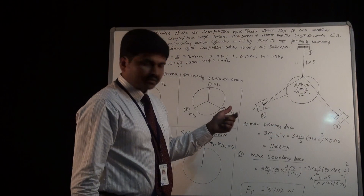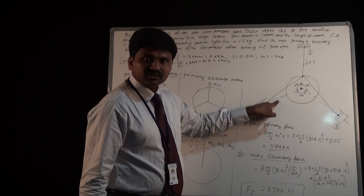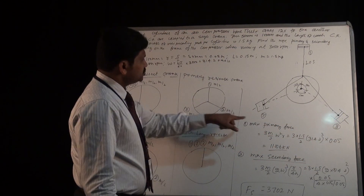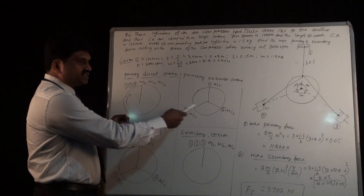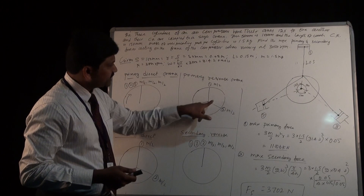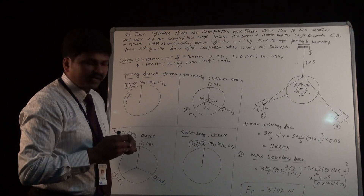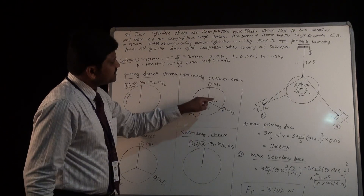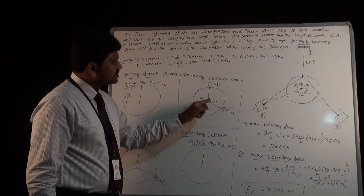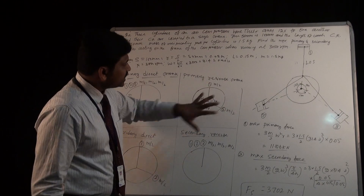The direct crank of cylinder 3 is shown at 240 degrees. To show the reverse crank, 240 degrees is measured in the opposite direction. Now, looking at the diagram: three masses are placed at one point for the direct cranks, and the half-masses m/2 are placed at three equally spaced points — each separated by 120 degrees. Because equal magnitude masses are placed at equal angles, they will produce centrifugal forces that get balanced by each other. There is no unbalanced force due to the reverse crank masses.